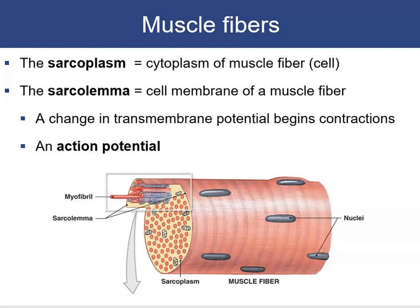Muscle fibers are long and cylindrical, so they use specialized vocabulary. The sarcoplasm refers to the cytoplasm of a muscle fiber; the sarcolemma refers to the cell membrane. A sudden change in the transmembrane potential across the sarcolemma is the first step in contraction — it creates an action potential that causes the muscle to shorten and contract.